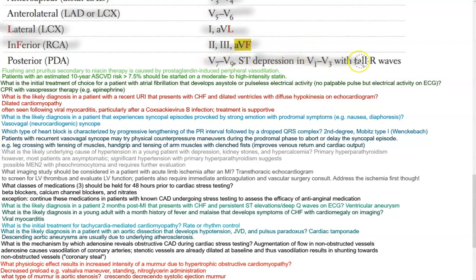Flushing and pruritus secondary to niacin therapy is caused by prostaglandin-induced peripheral vasodilation. Patients with a history or an estimated 10-year ASCVD risk greater than 7.5% should be started on moderate to high intensity statin. What is the initial treatment for a patient with atrial fibrillation that develops asystole or PEA? That would be CPR with vasopressor therapy such as epinephrine.